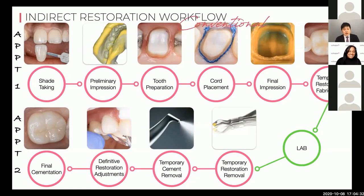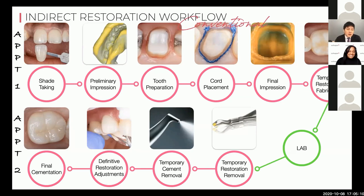This is the conventional indirect restoration workflow, which you're probably very familiar with. It requires two appointments. On the first appointment, we do our tooth preparation and final impression, then send the impression to the lab. The lab fabricates the restoration, and we do our cementation on the second appointment. On the first appointment, we also do shade taking first — because otherwise the teeth will get dehydrated and the color will change — followed by a preliminary impression, which we need in order to fabricate the temporary restoration.